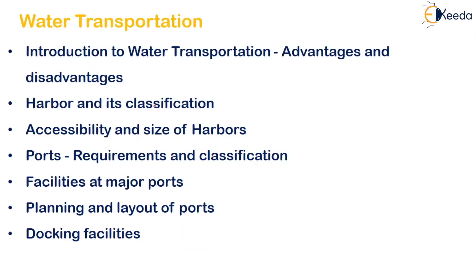The water transportation chapter involves the following lessons: introduction to water transportation, advantages and disadvantages, harbour and its classification, accessibility and size of harbours, ports requirements and classification, facilities at major ports, planning and layout of ports, and finally the docking facility. We have to read in detail about each and every lesson.